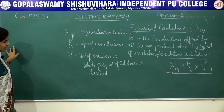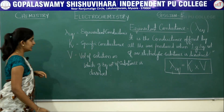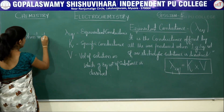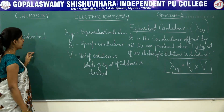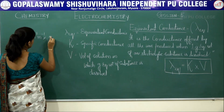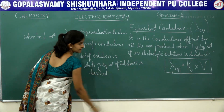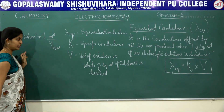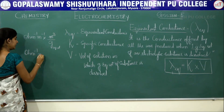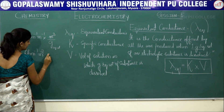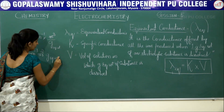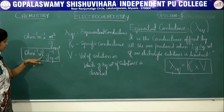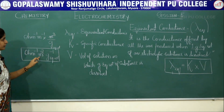The unit of lambda eq, that is equivalent conductance, is derived as follows: the unit of specific conductance is ohm inverse meter inverse (or cm inverse), multiplied by volume in meter cube (or cm cube), divided by gram equivalent weight. So the unit becomes ohm inverse meter square per gram equivalent weight. That is the unit of your equivalent conductance.